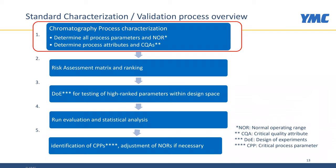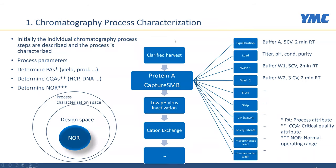We will show how we have used modeling and the features of Capture SMB to develop this characterization and validation concept, which consists of five different steps. The first step is chromatographic process characterization, where we determine all process parameters and normal operating ranges, and then determine process attributes and CQAs. We need to know what our process looks like, analyze the steps, and list the process parameters—such as flow rates, loading volumes, washing volumes, and buffer types.